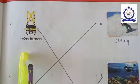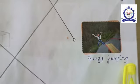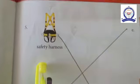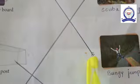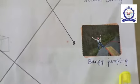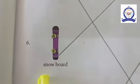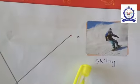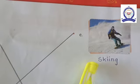The fifth one is a safety harness. It is related to bungee jumping. The sixth one is a snowboard. It is related to skiing.